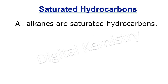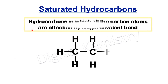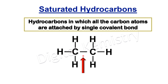Yaad rakhiye ki tamam alkane saturated hydrocarbons hote hain. Saturated hydrocarbons wo hydrocarbons hote hain jinmein tamam carbon atoms ke darmiyan single covalent bond maujud ho. Tamam alkane mein carbon atoms ke darmiyan single covalent bond maujud hota hai.